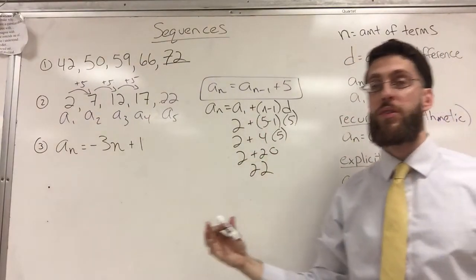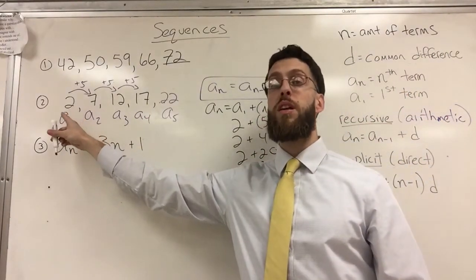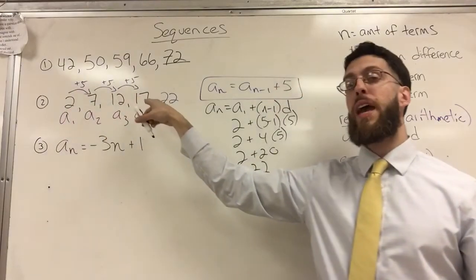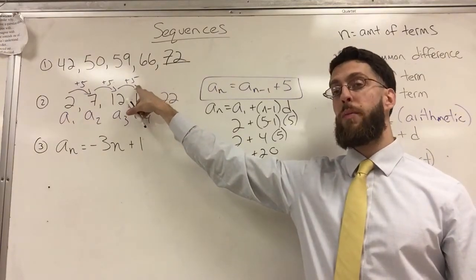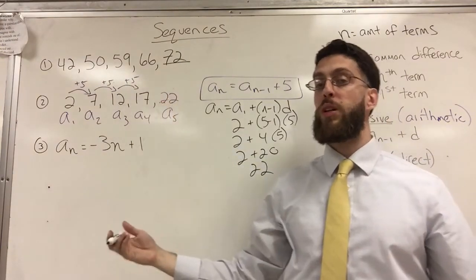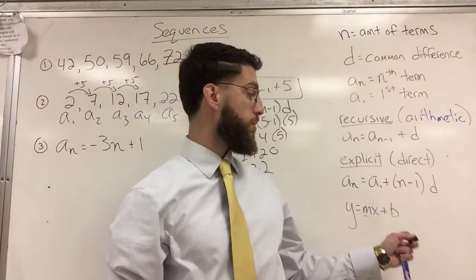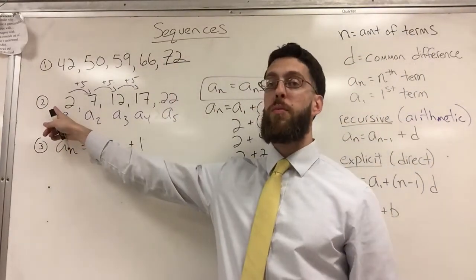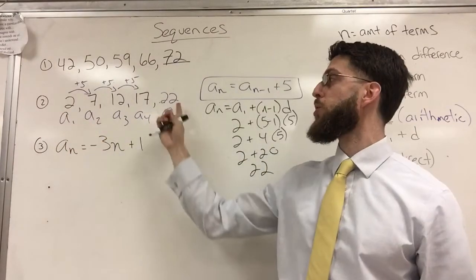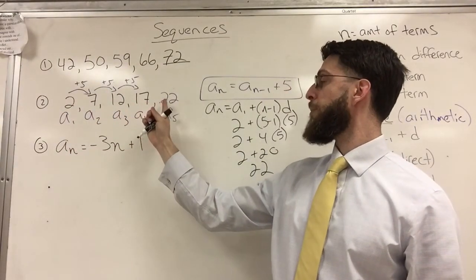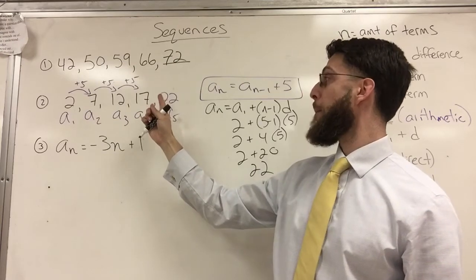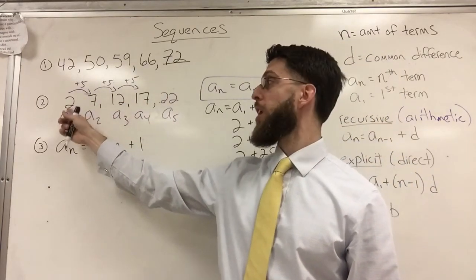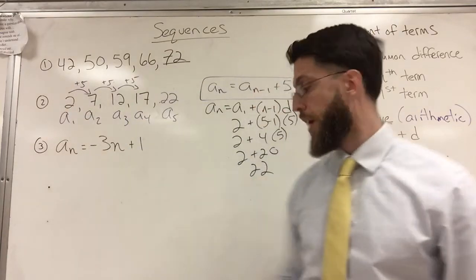This weird and crazy formula makes perfect sense. It just says wherever you want to be, you get there by starting at the first term, jumping N minus 1 terms, multiplying by however many each term jumps by. It's really simple. And that's very similar to Y equals MX plus B. If you wanted to figure out the zeroth term, that imaginary term, that's easy too. You just count backwards. If I were to count backwards, I would be subtracting 5 each time, which means the zeroth term would be negative 3.